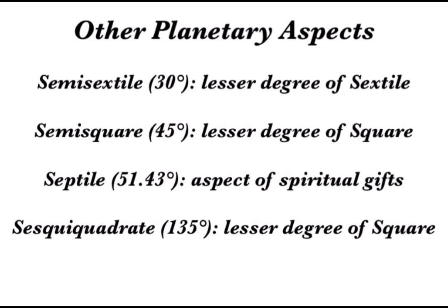Other planetary aspects to look at would be the semi-sextile, which is 30 degrees and is the lesser degree of the sextile; the semi-square, which is 45 degrees and is the lesser degree of a square; the septile, which is 51.43 degrees and is the aspect of spiritual gifts; and the sesquiquadrate, which is 135 degrees and acts as the lesser degree of a square as well.